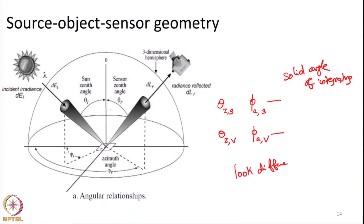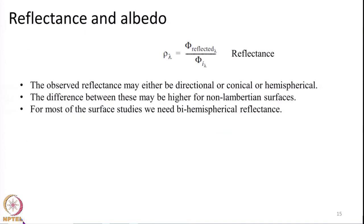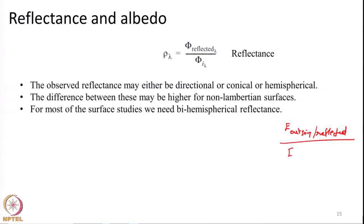This is what I explained as source-object-sensor geometry in the last class. We also defined what reflectance and albedo is. The basic definition of reflectance is outgoing irradiance — especially in reflected form; I am not talking about emitted energy — divided by incoming irradiance E. Based on the solid angle of our measurements and the direction in which we look, reflectance can be defined as different quantities.